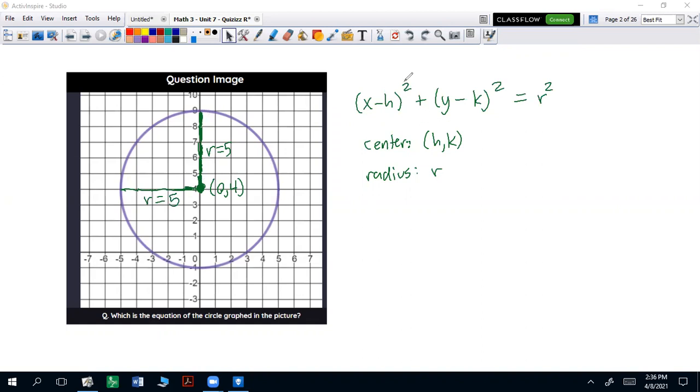So we've got our center at (0,4) and our radius at five. So we can plug in zero, four, and five in for those values.